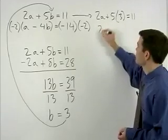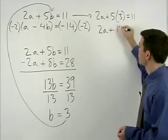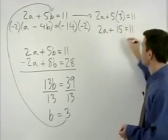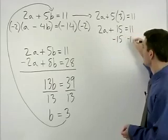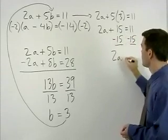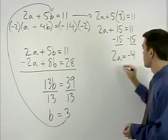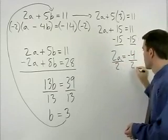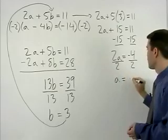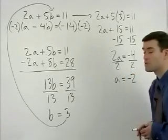That simplifies to 2a plus 15 equals 11. Subtracting 15 from both sides gives us 2a equals negative 4. Therefore, dividing both sides by 2, we have a equals negative 2.